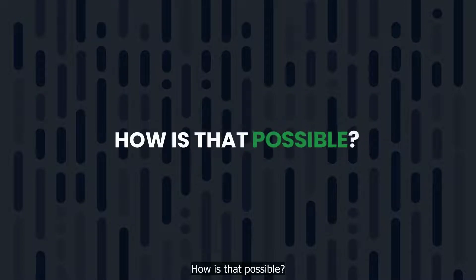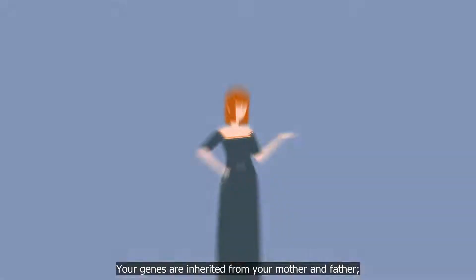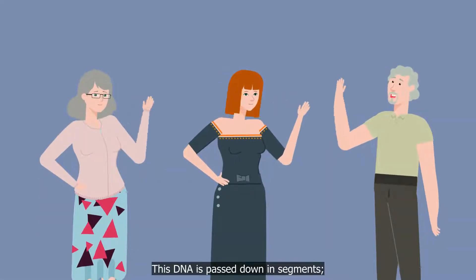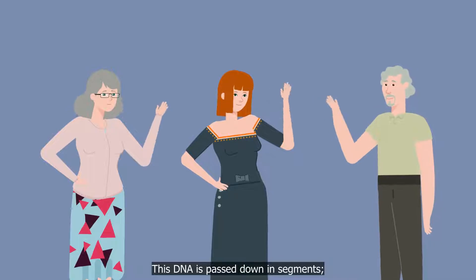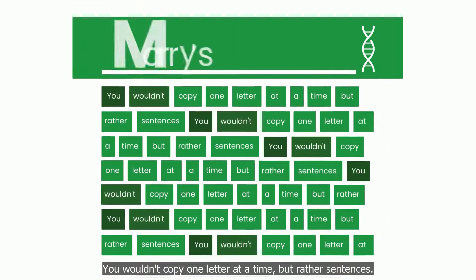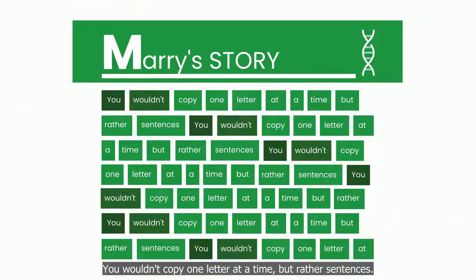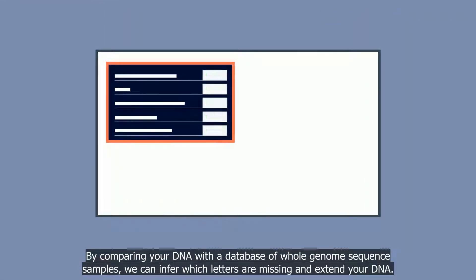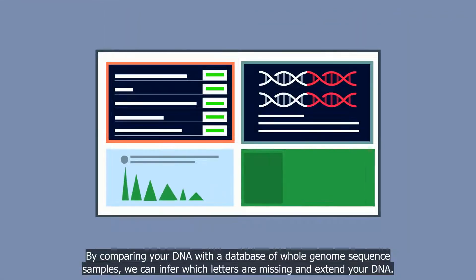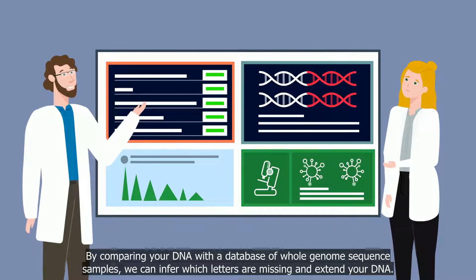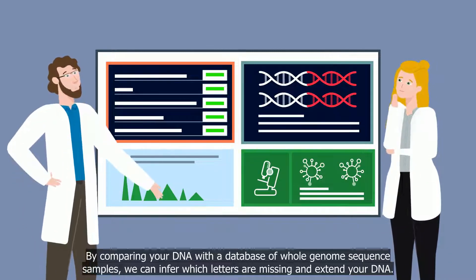How is that possible? Your genes are inherited from your mother and father, and this DNA is passed down in segments. Think of it like copying a book — you wouldn't copy one letter at a time, but rather sentences. By comparing your DNA with a database of whole genome sequence samples, we can infer which letters are missing and extend your DNA.